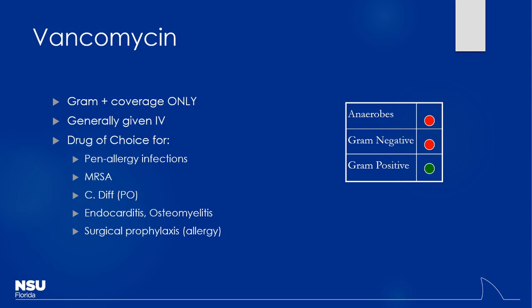The big thing we like vancomycin for is that it covers MRSA. Remember the two bugs you want to keep an eye out for: MRSA and Pseudomonas. What drugs we've already talked about cover Pseudomonas? Out of the cephalosporins, Ceftazidime from the third generation — though we don't use it frequently due to resistance — and the fourth-generation agent Cefepime. Out of the penicillins, it's the anti-pseudomonal agents, specifically Piperacillin. Pseudomonas starts with a P, Piperacillin starts with a P — you can make that association, even though Pseudomonas has a silent P.